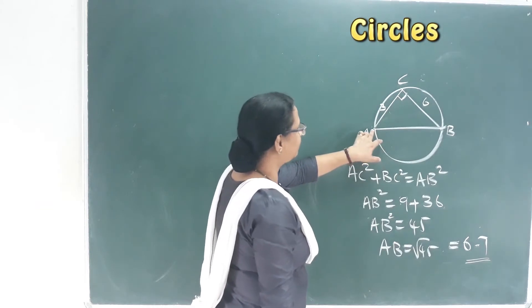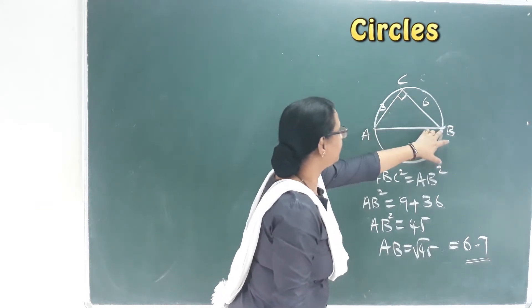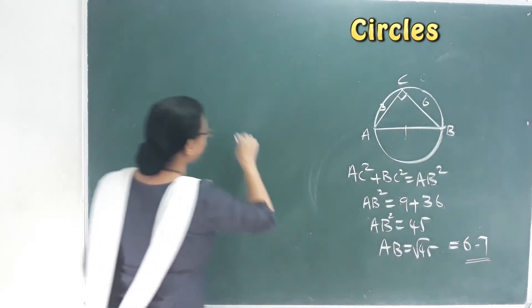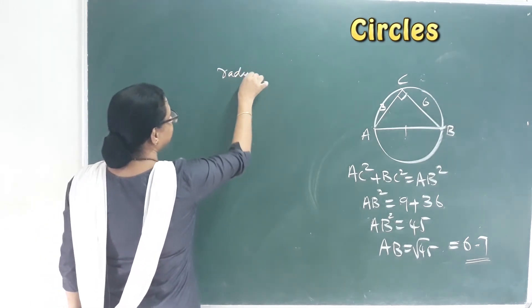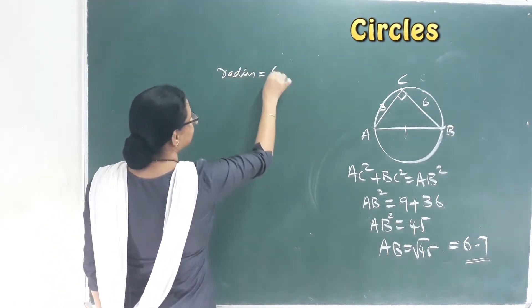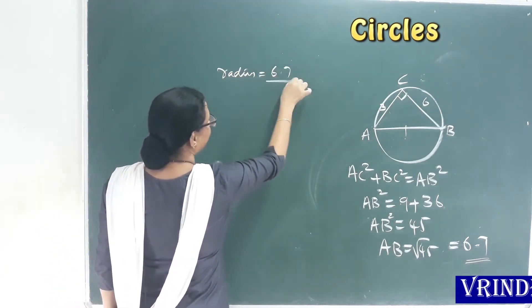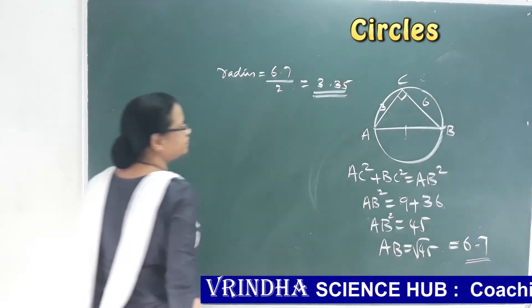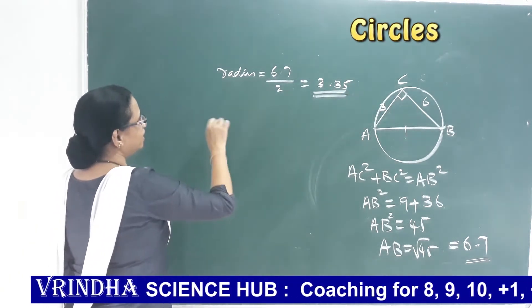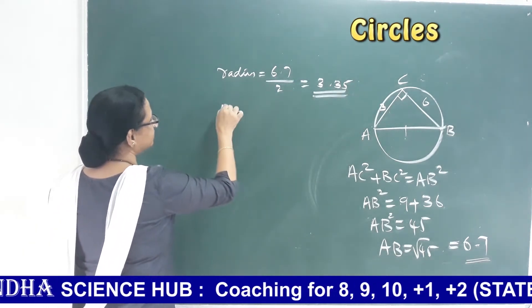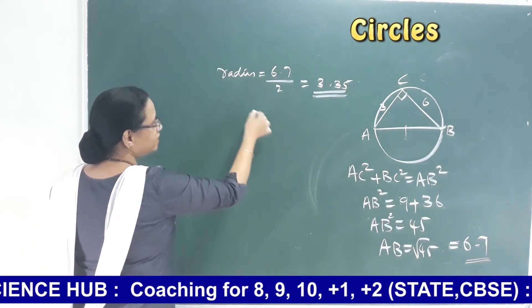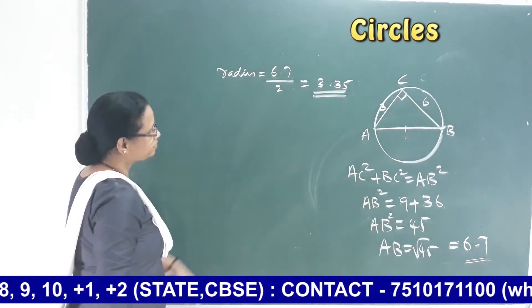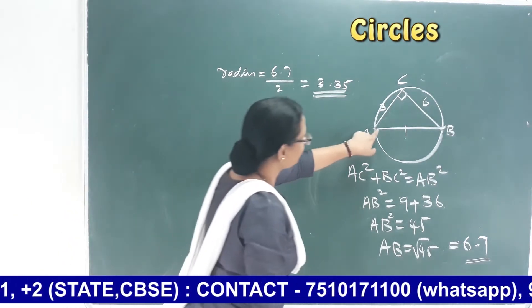That means AB is approximately 6.75. So I will put the radius as 3.375, approximately 3.3.